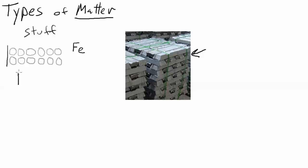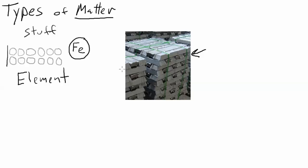When you have an example of matter like iron that's made up of all the same type of atom, we call that type of matter an element. It can be a little confusing because 'element' is used two ways in chemistry: it describes a specific type of atom, but it's also used to describe the type of matter that's made up of just one type of atom. So iron is an element, iron bars are an element, and they're made up of iron atoms - it just works for all three levels of this type of matter.